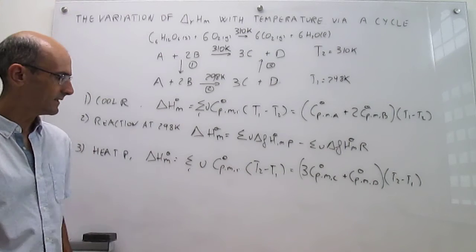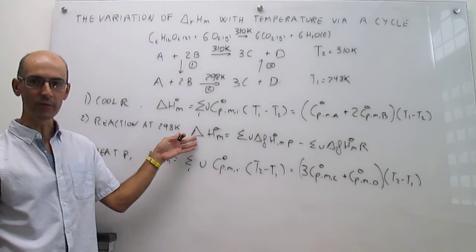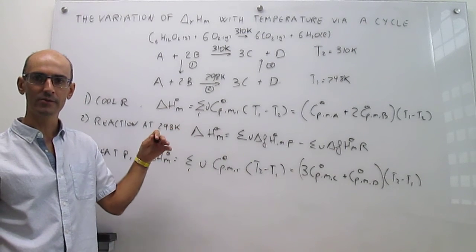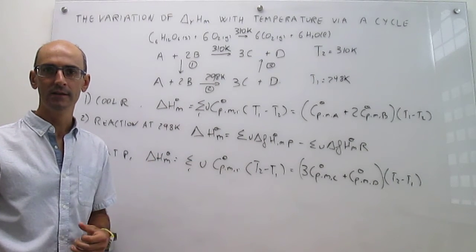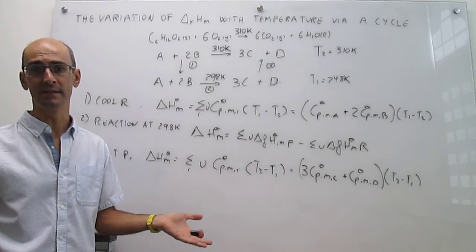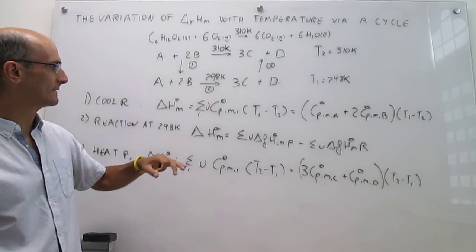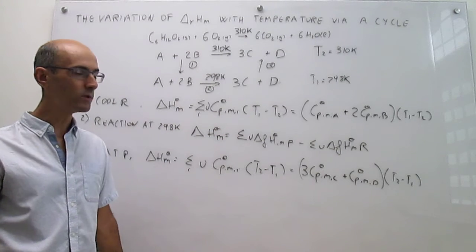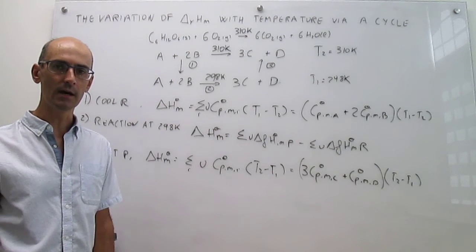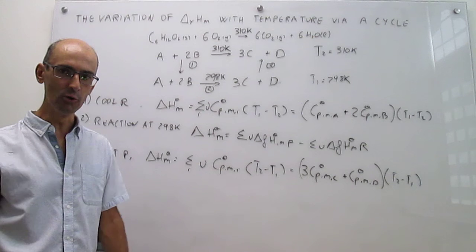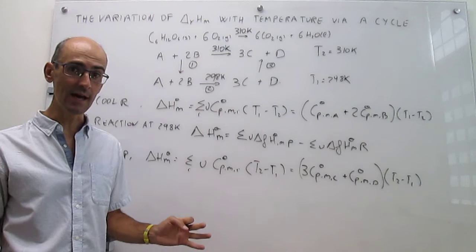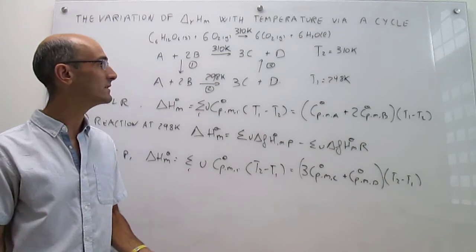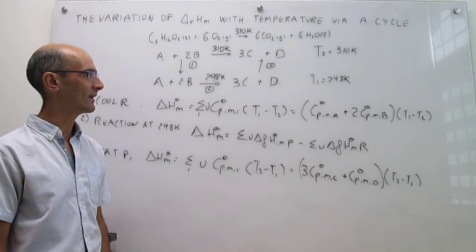Step three will be positive; step two is whatever the reaction is — negative if exothermic, positive if endothermic; and step one is a cooling process, so it's negative. Add all three up and you get exactly what the enthalpy of the reaction is at the temperature you want, which in this case is 310 Kelvin.